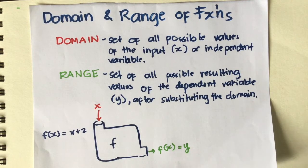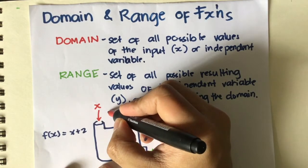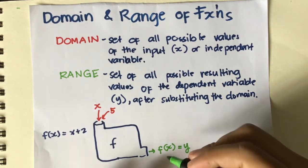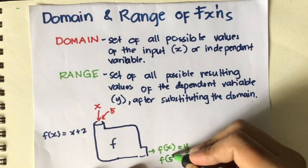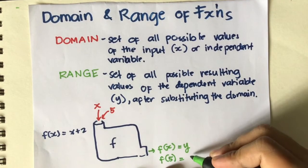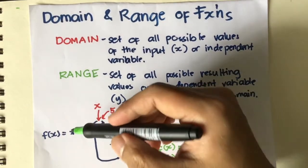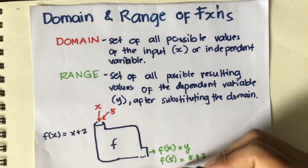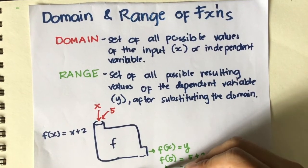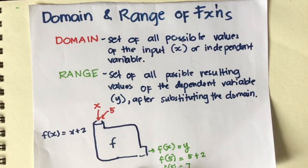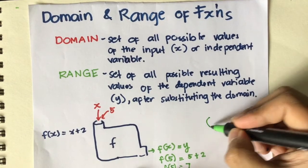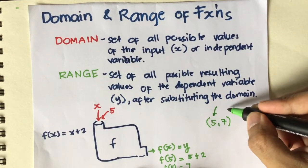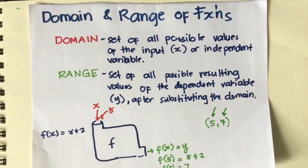Let's deal with real values of x. Let's say our input is 5, so we are using the value of 5 and we have a unique output: 5 plus 2. I have substituted x with the new input 5, so therefore when x is 5, f of 5 is equal to 7, which means the ordered pair is (5, 7) — when the input is 5, the output is 7.